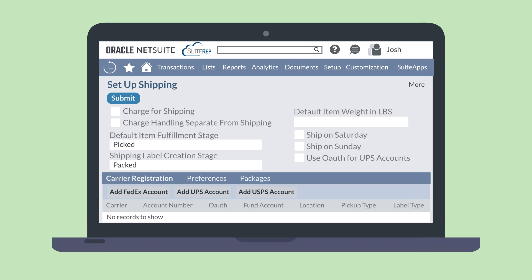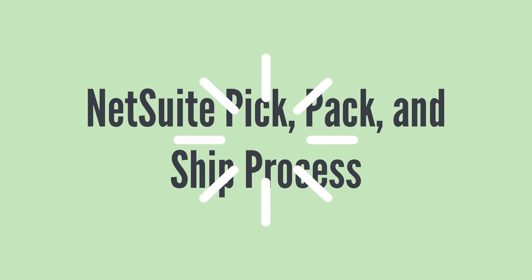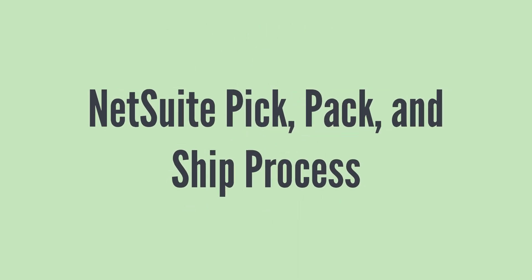The other preference you may want to set is the Shipping Label Creation Stage preference. If you have the Shipping Label Integration feature turned on, this preference lets you decide at which status NetSuite will generate tracking numbers and the shipping label for an order. Let's walk through the Pick, Pack, Ship process.